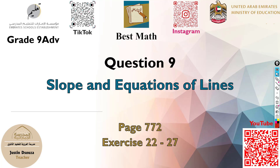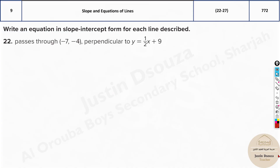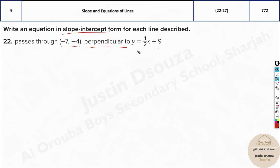Question 9 is about slope and equations of lines. A point is given which passes through a line that is perpendicular, and the equation of a perpendicular line is given, but we need to find the equation for this line whose only points are given. Since they have told it's perpendicular, we can find something about the slope, and once we have slope and points we can find the equation in slope-intercept form.